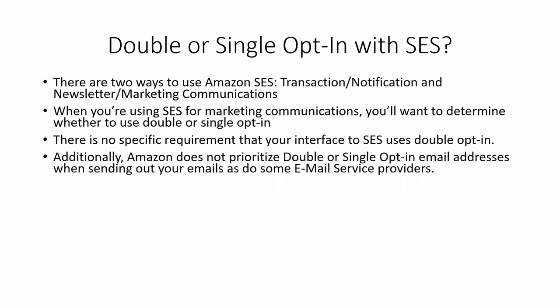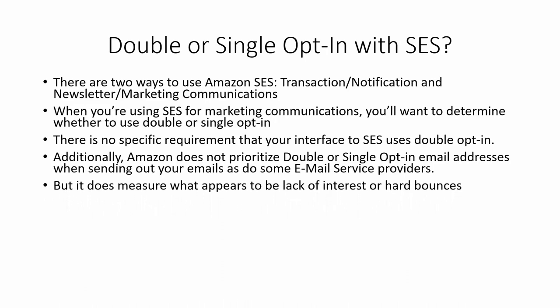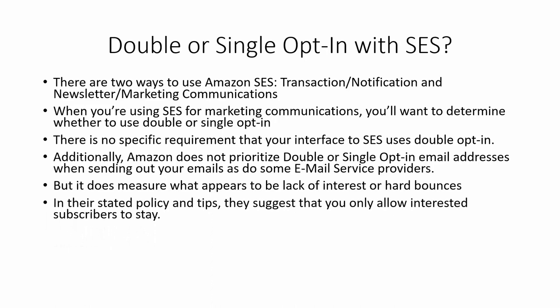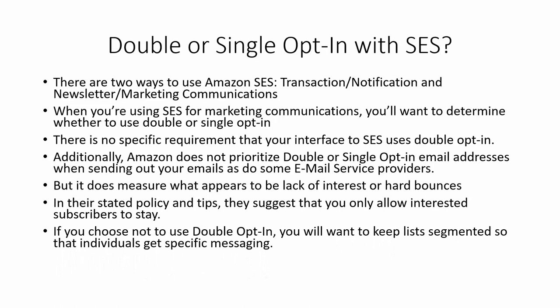Amazon does not prioritize double or single opt-in email addresses when sending, as some email service providers do. However, it does measure what appears to be a lack of interest through hard bounces. It's their stated policy and tips that they suggest you only allow interested subscribers to stay, which would indicate double opt-in — since subscribers have gone through the second level of trying to get into your email marketing list. If you choose not to use double opt-in, you'll want to keep your list segmented so individuals get specific messaging related to the reason they actually opted in.